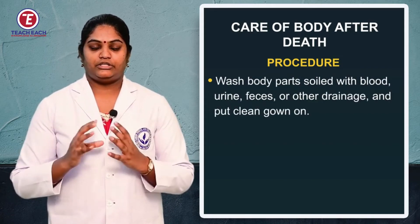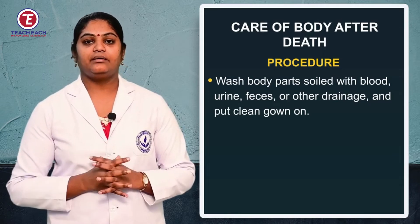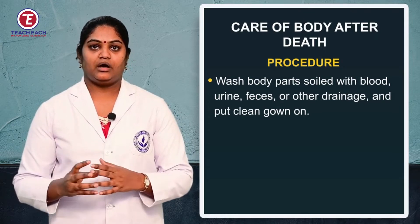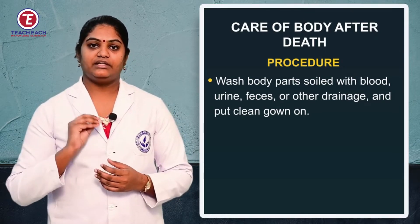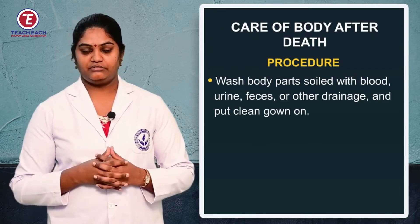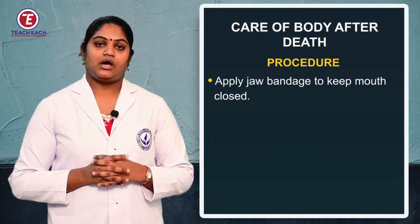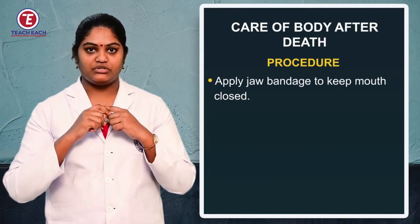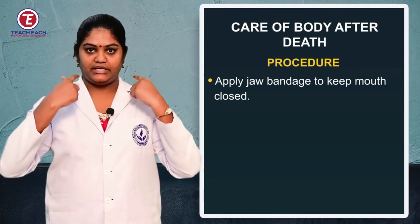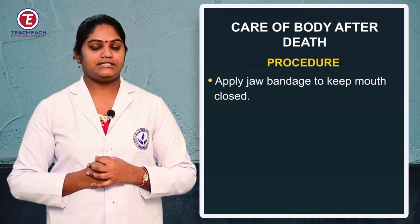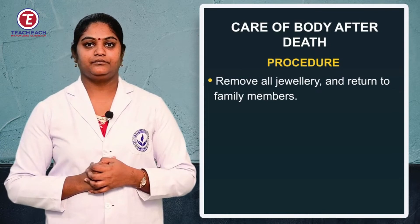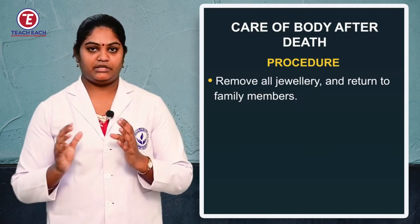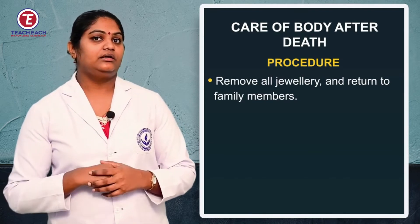After removing all tubes and catheters, clean the patient's body — if there is any fecal matter, urine, or blood, clean it with absorbent cottons. Then tie a bandage over the chin and jaw line to keep the mouth closed. Remove all ornaments and hand them over safely to the patient's relatives.